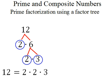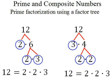Notice that I started by breaking 12 into 2 times 6. I could have started with 3 times 4 and gotten the same result. I would circle 3 because it's prime, then break 4 into 2 times 2, which are both prime. So we end up with 2 times 2 times 3.